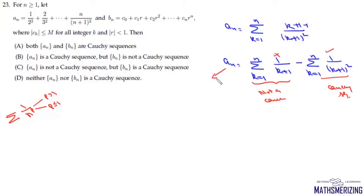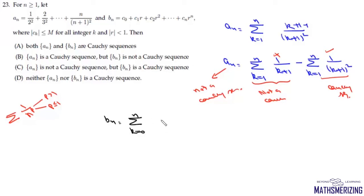That means Aₙ is not a Cauchy sequence. Now, for Bₙ, we can write Bₙ as the summation where k varies from 0 to n of cₖ · rᵏ, where |cₖ| ≤ m.